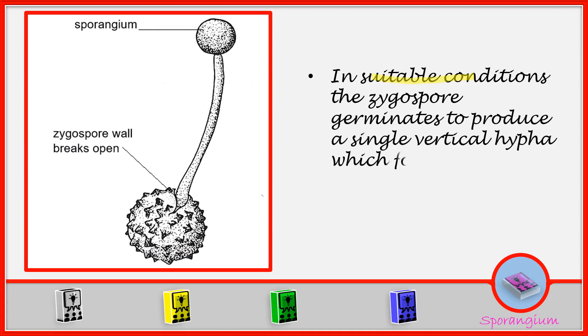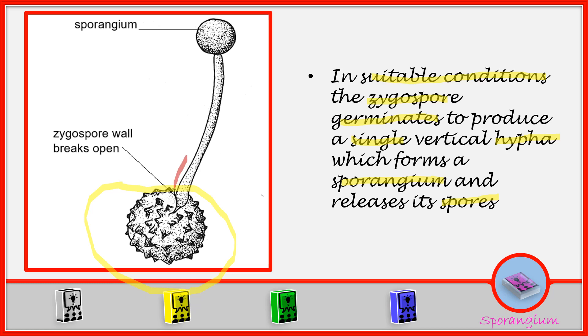In suitable conditions, the zygospore germinates to produce a single vertical hyphae which forms a sporangium and releases its spores. Under favorable condition, it develops a vertical hyphae. And this vertical hyphae on top forms a sporangium. Now this sporangium is where the spores are formed. Then these spores are going to be released and fly out.